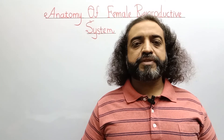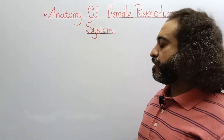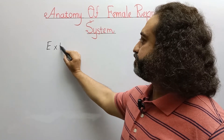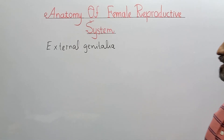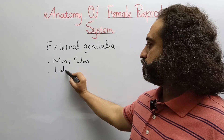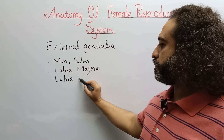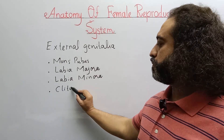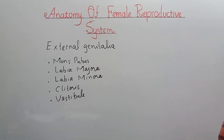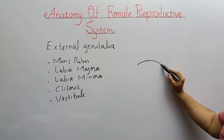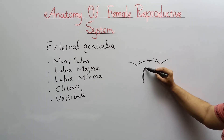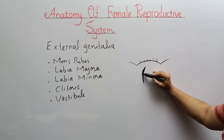The human female reproductive system is composed of two basic parts: external genitalia and internal genitalia. External genitalia consists of mons pubis, labia majora, labia minora, the highly sensitive clitoris, and vestibule. If we have a glance at the external genitalia, there is a broad area called mons pubis. The first part is a skin fold analogous to the scrotum, called labia majora.